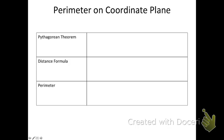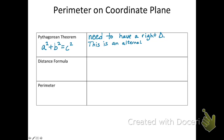The perimeter on the coordinate plane involves the Pythagorean theorem, the distance formula, and the definition of perimeter. The Pythagorean theorem is a² + b² = c². In order to use the Pythagorean theorem, you need to have a right triangle. The reason we're talking about this is because when finding the perimeter of a shape, you have to measure things, and the Pythagorean theorem is a great way to find the distance or length of a line. It is an alternative to the distance formula.